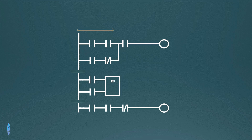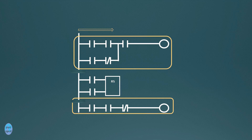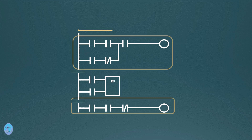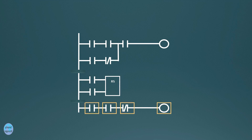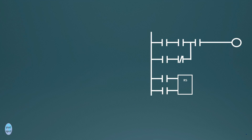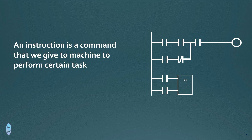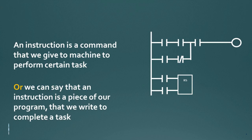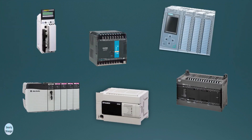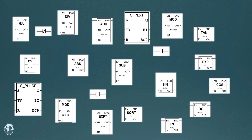The logic or program in a ladder diagram typically flows from left to right. The program can be divided into sections called rungs. Each rung consists of multiple input instructions and a single output instruction. We can define an instruction as a command that we give to a machine to perform a certain task — a piece of our program that we write to complete a task. All brands of PLC software normally have the same instructions.